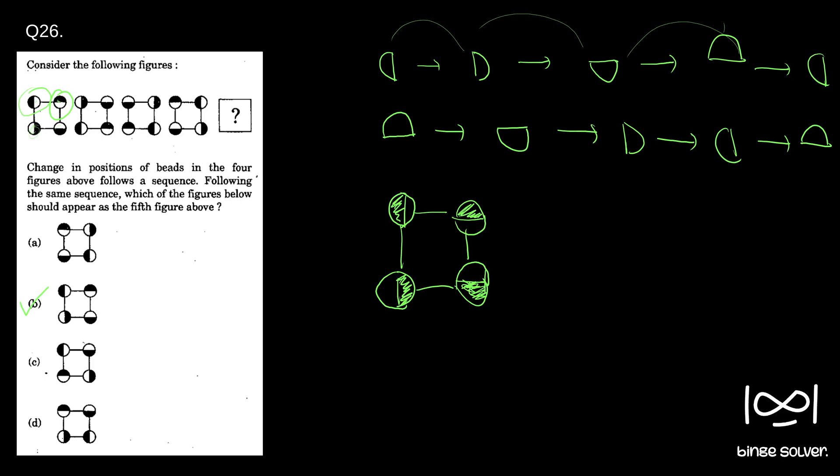Next question. Question 27. A bell rings every 18 minutes. A second bell rings every 24 minutes. A third bell rings every 32 minutes. If all three bells ring at the same time at 8 o'clock in the morning, at what other time will they all ring together?